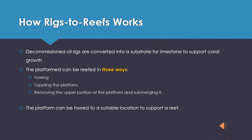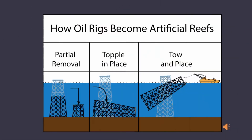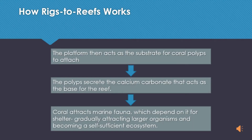How the rigs-to-reef concept works is: decommissioned oil rigs or rigs no longer in use are turned into a reef platform to support coral growth. This can be done in three main ways: towing the platform to a suitable location, toppling the platform, or removing the upper portion of the platform and submerging it. This diagram shows the three main ways an oil rig can be reefed into a substrate. Once the platform is successfully established, it can then act as a substrate for coral polyps to attach.